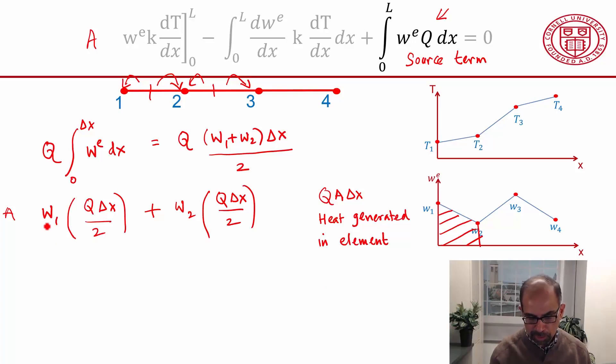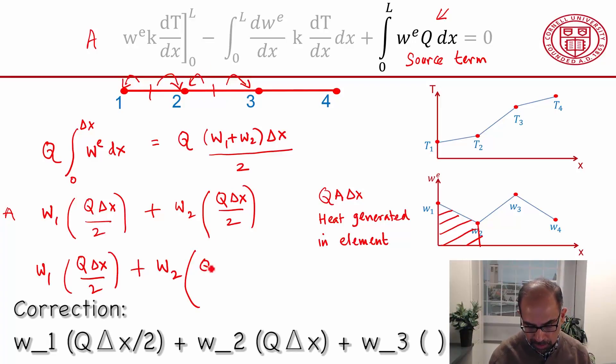And so when you look it all out, what happens is that for w1, you'll get only one contribution—so it'll just be q delta x over 2. For w2, you'll get two contributions: this one from the first element, and then you'll also get a contribution from the second element. So that'll be q delta x over 2 plus w3 and so on. You can work it out.